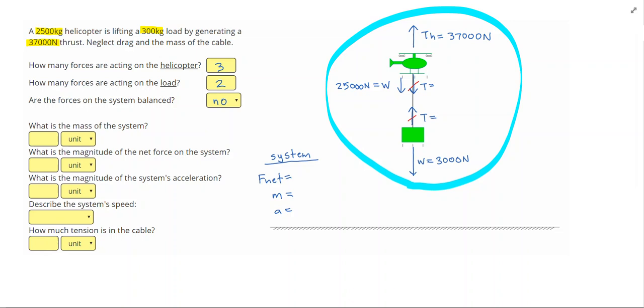To get the net force, I look and I see that I have 37,000 Newtons pointing upwards, and pointed downwards, I have 28,000 Newtons. That's 3,000 plus the 25,000.